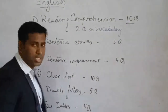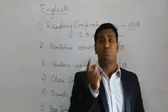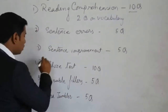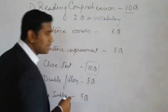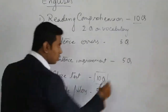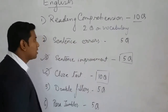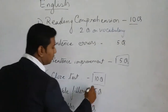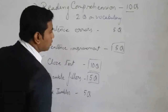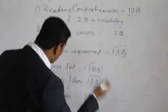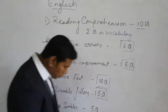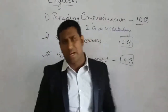Don't start with reading comprehension first. Start with easy questions. You can start with cloze test — they are asking 10 questions and it is a very easy part of English. Then start sentence improvement, also very easy with 5 questions. Then come to double fillers — again very easy, 5 questions. That gives you 20 questions already attempted. Then you can attempt sentence series, another 5 questions.